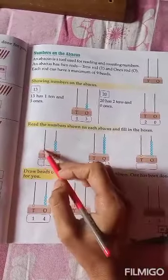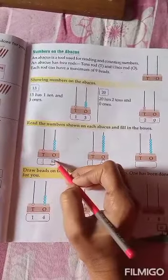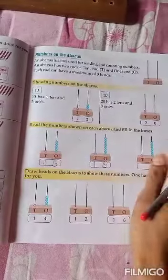Yes, 1. So, count first ones? No. First, you count on 10 side, then 1 side beads. Good.